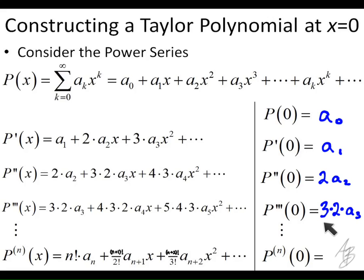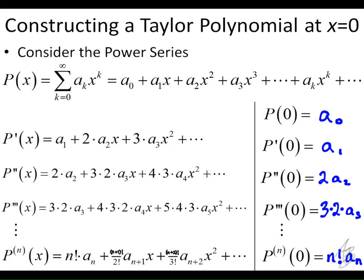We start to notice a pattern: the third derivative evaluated at 0 is 3·2·a₃, the fourth derivative evaluated at 0 is 4·3·2·a₄, and what we end up with is a factorial. So the nth derivative of our power series evaluated at 0 is going to be n! times aₙ.